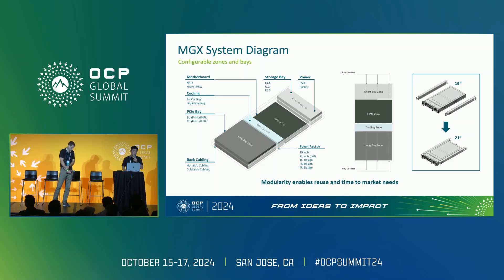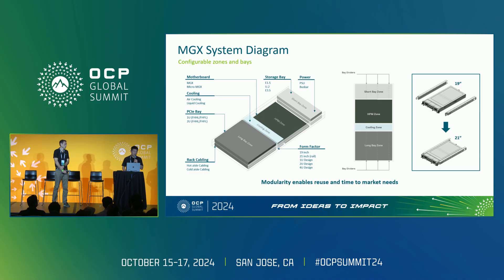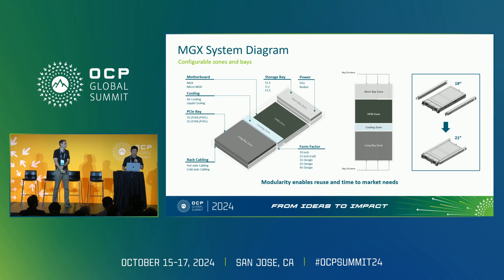The HPM comes in two form factors: full width, called MGX, and half width, called micro MGX. Next to that is a cooling zone which can use air cooling with fans or have a manifold for liquid cooling applications. On the bottom is a long bay zone capable of housing a full length PCIe card, full height, as well as NICs for various cabling applications. The system supports both bus bar applications for CSP as well as enterprise using PSUs.